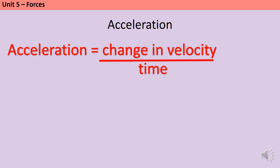The next quantity we need to define is acceleration. In physics, acceleration is about the change in velocity that happens within a given time frame. Velocity is about speed in a given direction, so an object accelerates if it speeds up, if it slows down, or if it changes direction. This is a broader definition of acceleration than you might use in everyday life, where we tend to only think about objects speeding up.